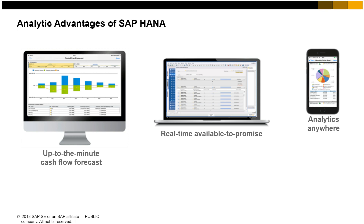SAP HANA makes it possible to look at more data, do more sophisticated analysis, and perform complex calculations, like with SAP HANA apps. For example, the Advanced Available to Promise, ATP, app provides real-time visibility into current inventory, ordered stock, replenished stock, and stock being delivered. You can immediately reserve current stock for future delivery dates and reschedule existing orders on the fly to optimize product movement.